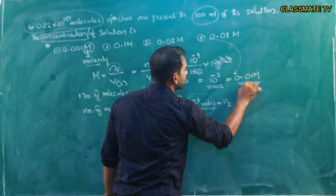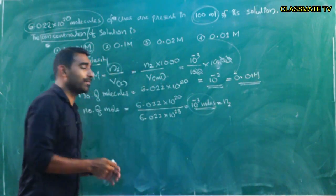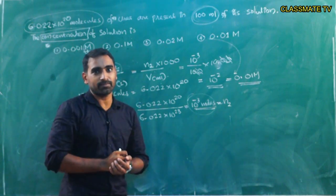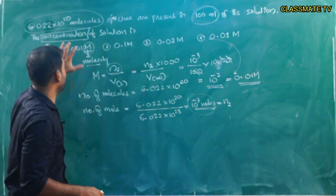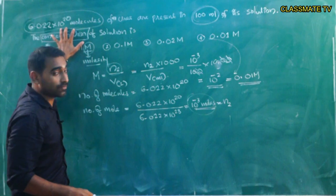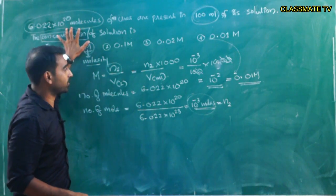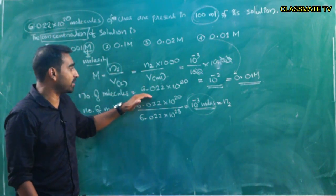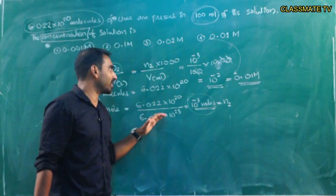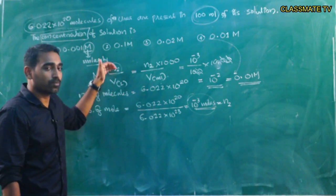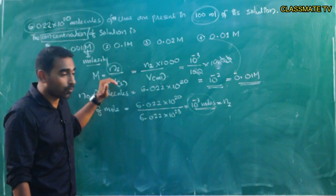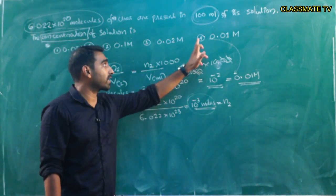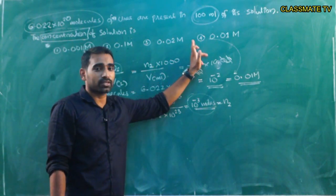Normally, number of moles are given in the question, but here number of molecules are given, so we first calculate number of moles. Using molarity = number of moles / volume in liters, the correct answer is option 4, which is 0.01 molar.